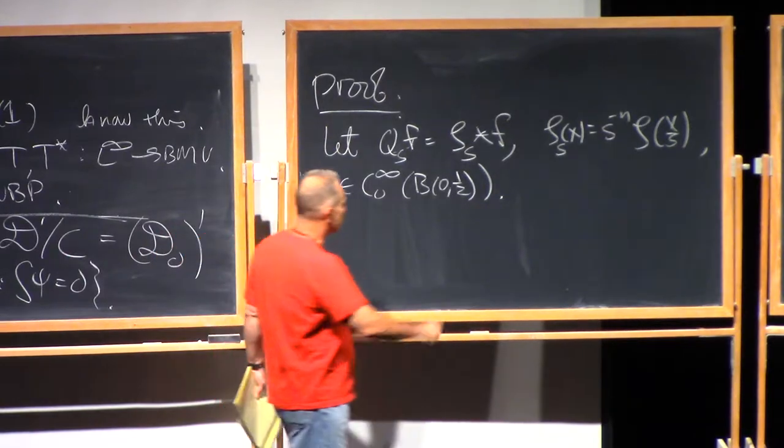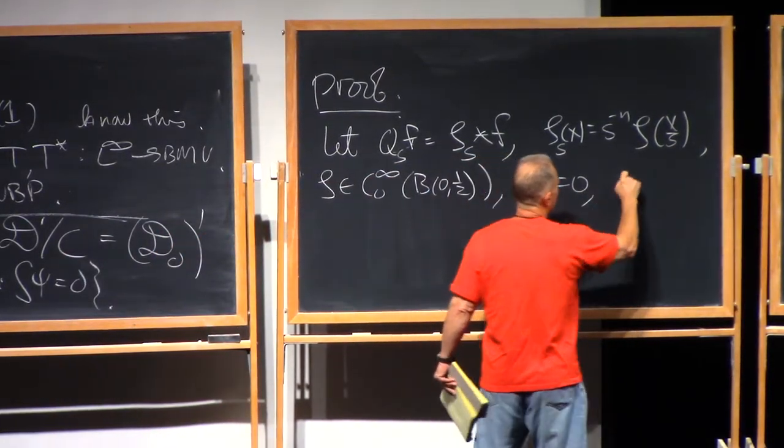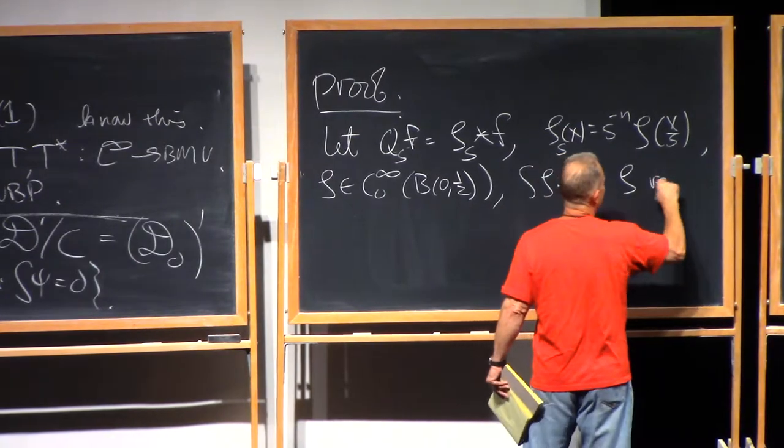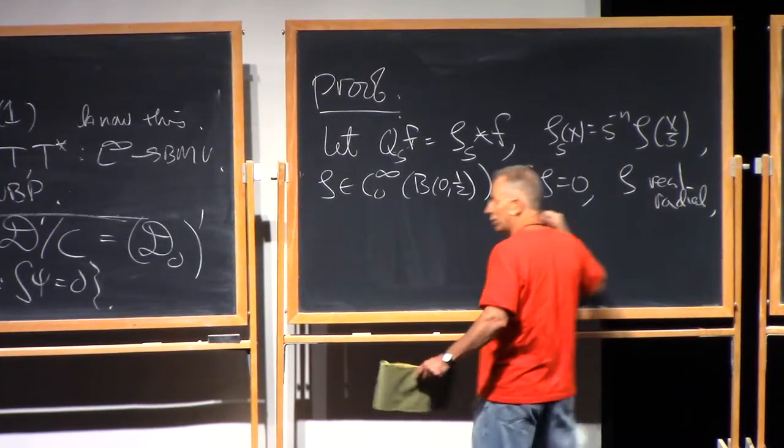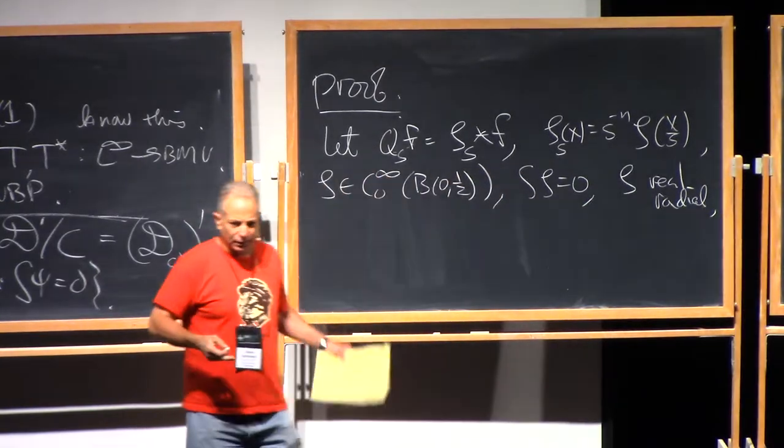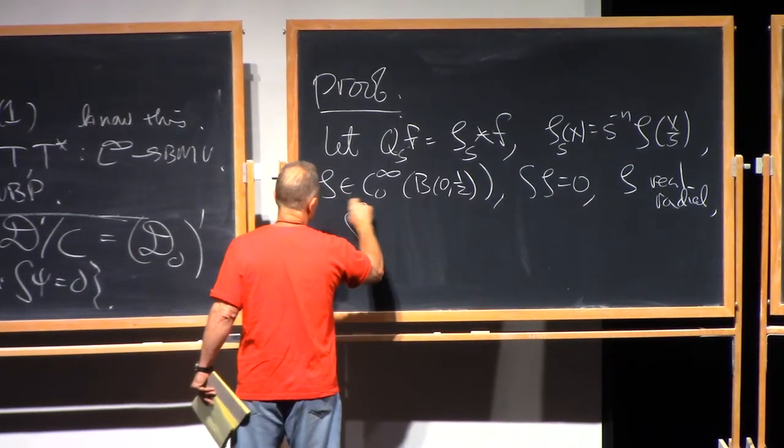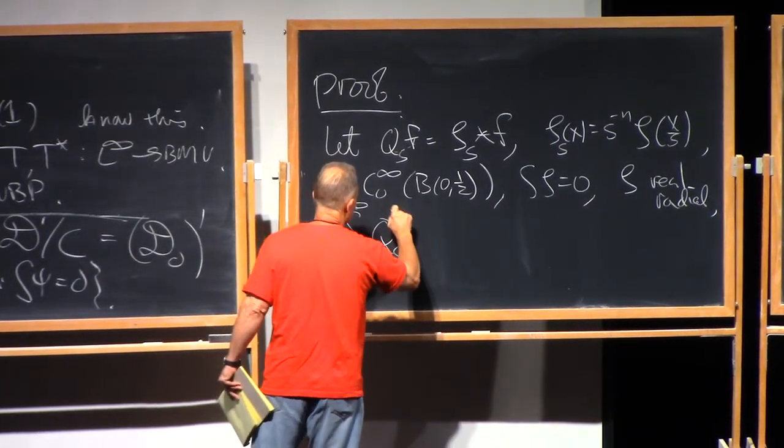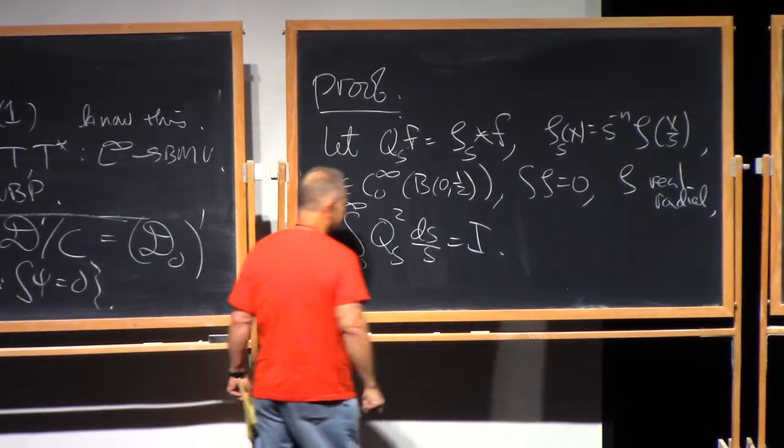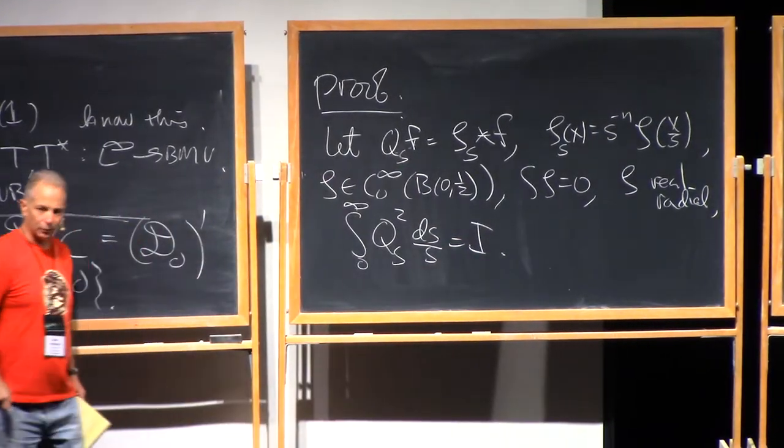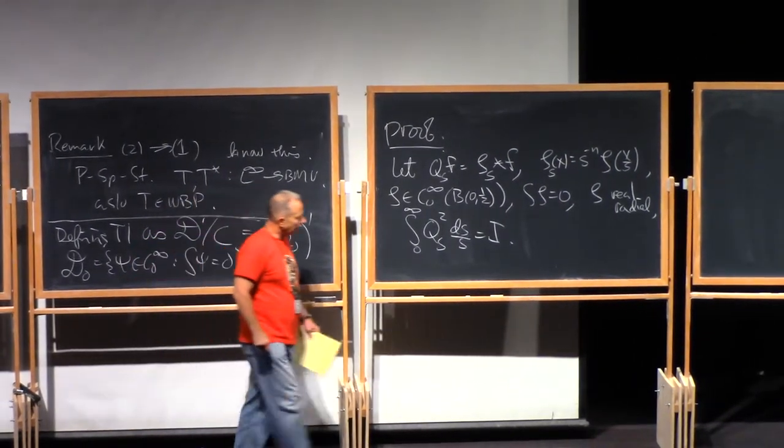And with mean value zero, and we're going to choose zeta to be real and radial, and non-trivial, of course. And then, as we've seen, in those circumstances, after a normalization, we get the Calderón reproducing formula for that family of Qs's.